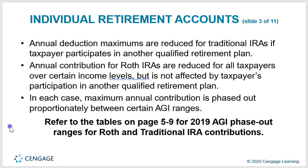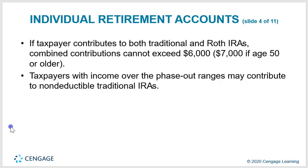Refer to table 5-9 for 2019 AGI phase-out ranges for Roth and traditional IRA contributions. If a taxpayer contributes to both a traditional and a Roth IRA, the combined contribution cannot exceed $6,000, or $7,000 if age 50 or older. Taxpayers with income over the phase-out ranges may contribute to a non-deductible traditional IRA.